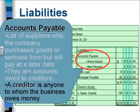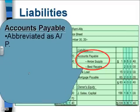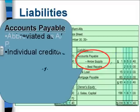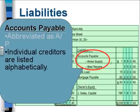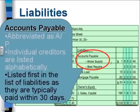A creditor is anyone to whom the business owes money. Accounts payable can be abbreviated as AP, but we're not going to do that on the balance sheet. On the balance sheet, accounts payable serves as a heading. In this case, $1,950 is owed to Arrow Supply and $250 is owed to Best Repair — we just list the amounts we owe beside their names, listed alphabetically. They are listed first under the liability heading before bank loan and mortgage payable because they are typically paid within 30 days.